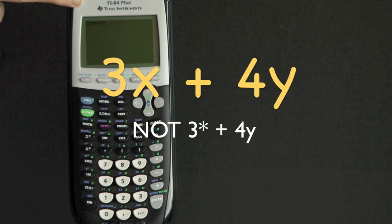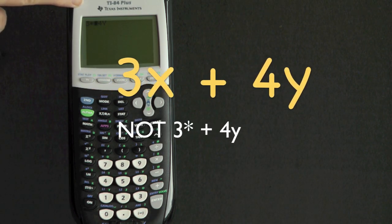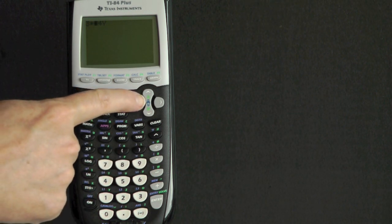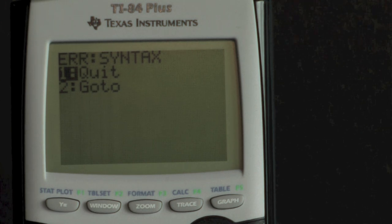This equation was supposed to read 3x+4y. A quick glance at the screen shows that we use the blue multiplication key instead of the x variable key. When we change the multiplication sign to x, our syntax error goes away.